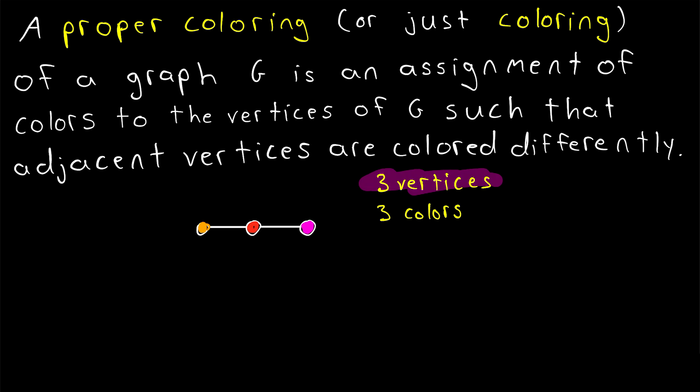Any time a graph has n vertices, we'll be able to color it with n colors, because if every vertex has a different color, then certainly adjacent vertices will always have different colors. But when we talk about colorings, typically our goal is to color a graph with as few colors as possible.